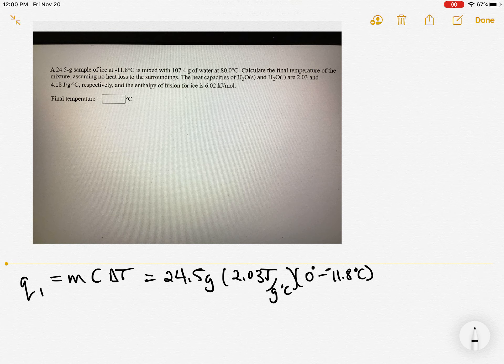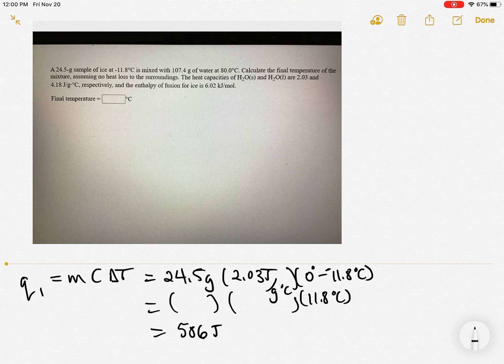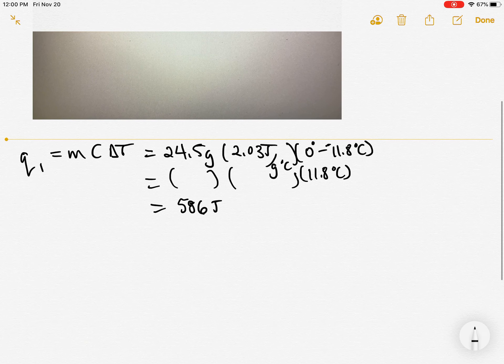So that's a minus, a minus. So that ends up being just 11.8 degrees Celsius with these other numbers. Multiply that through, your units cancel out, you get 586 joules.